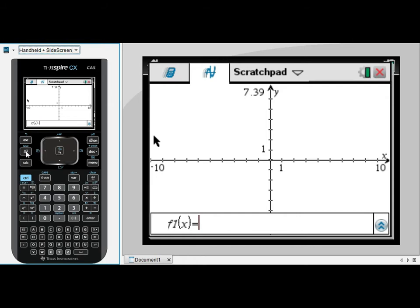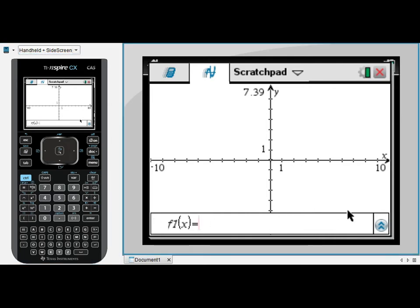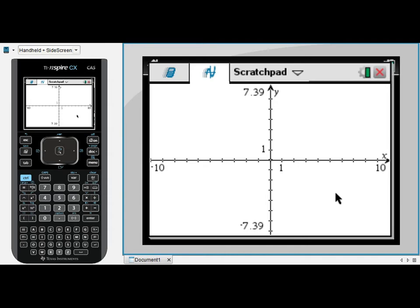When you do that, usually the entry line, as you see down the bottom here, will be open and the cursor will be flashing so that you're ready to enter an equation. Sometimes though the entry line might not appear. Your screen might look like this when you get here.